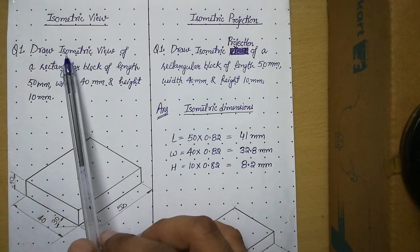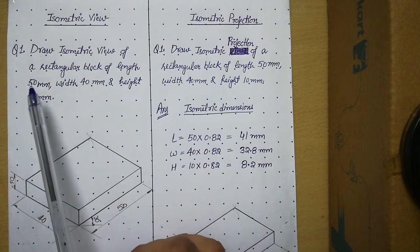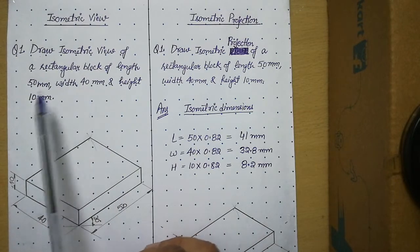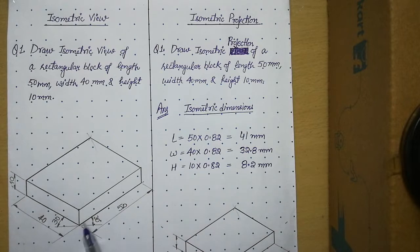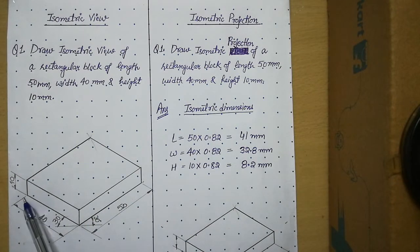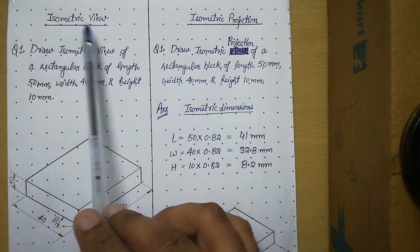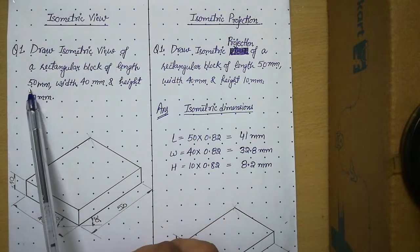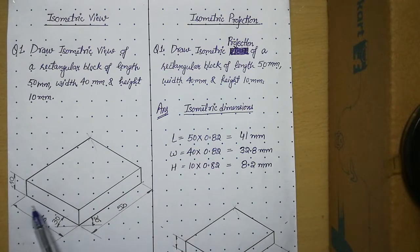So see when we have to draw isometric view of any particular solid, then whatever dimensions are given in the problem we have to use same dimensions while drawing. Means we will use this length as 50, we will draw this length as 40, we will draw this height as 10 mm. Means no calculations are required in isometric view. Whatever original dimensions are given in the problem we draw those dimensions as it is in the diagram.